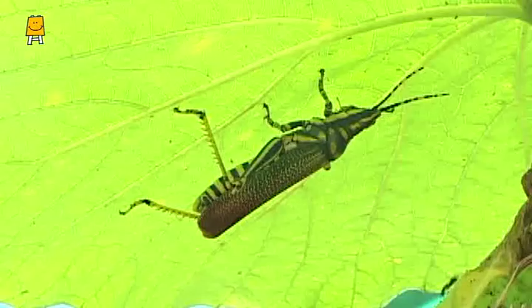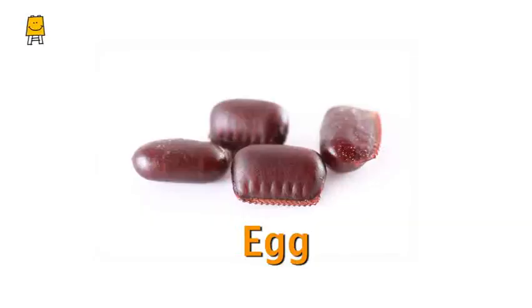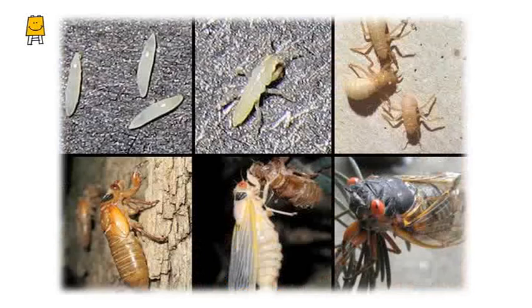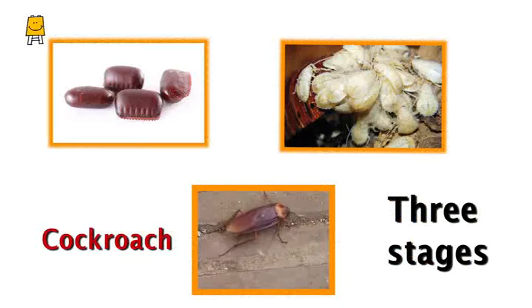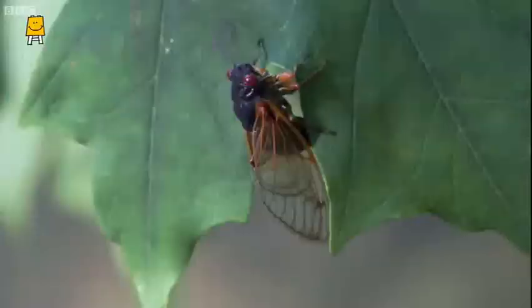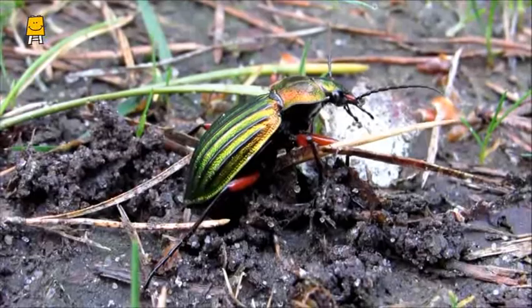There are some insects whose life cycle has only three stages: first egg, then nymph, and the third stage adult. These are insects whose life cycle does not have the pupa stage — cockroach, grasshopper, and dragonflies. The life cycles of these insects have only three stages. You should also find out other such insects around you.